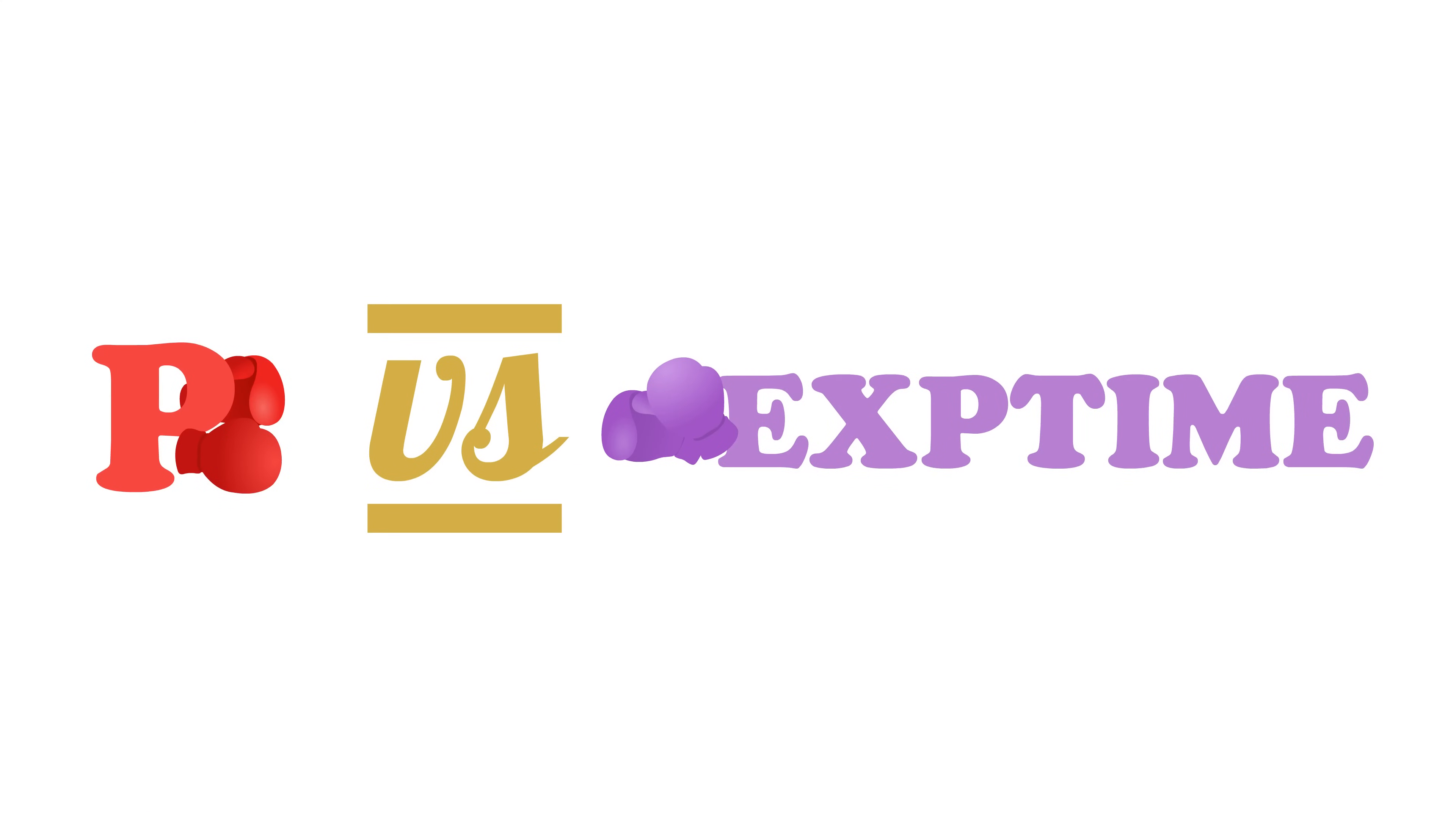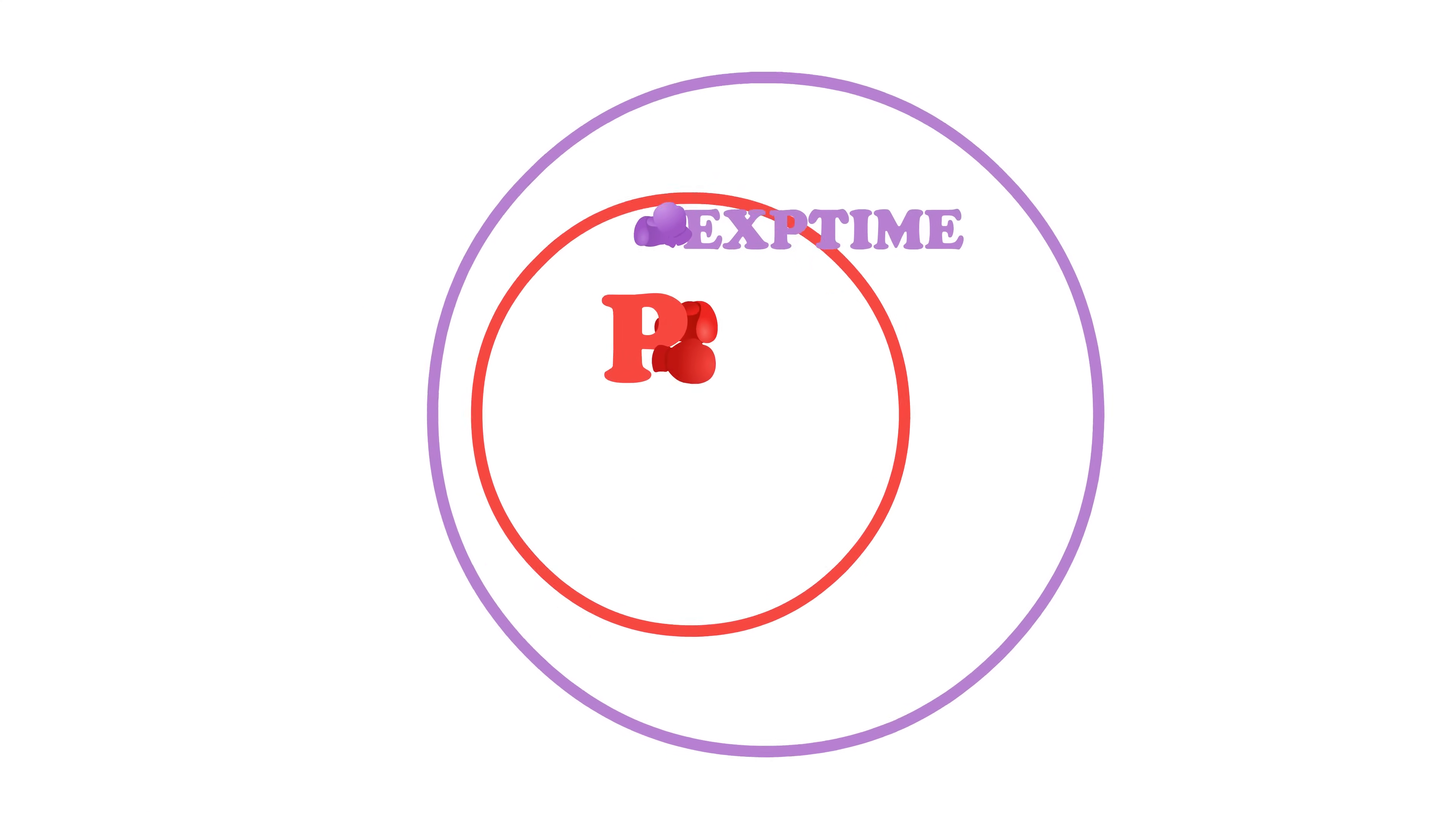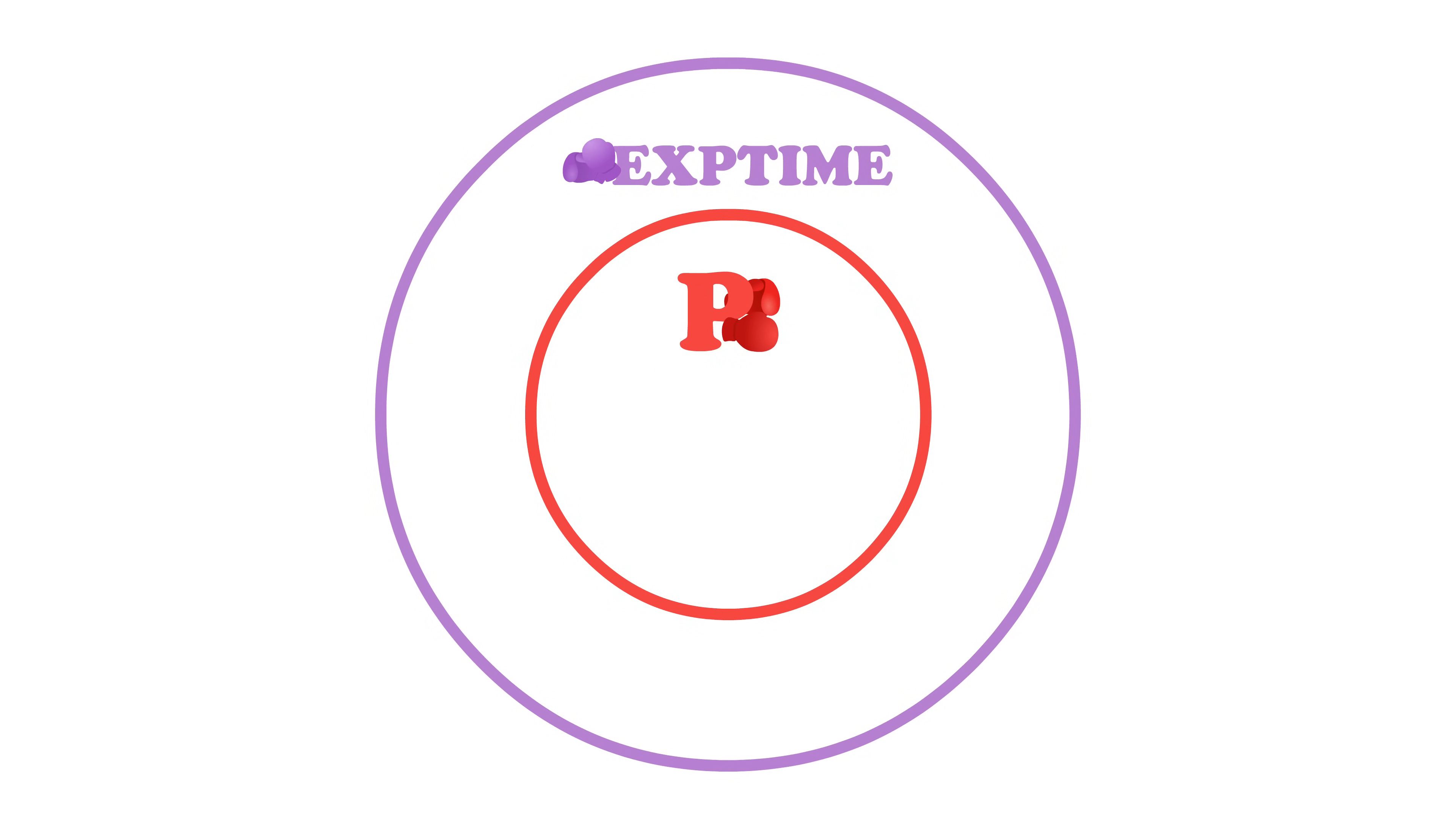Let's apply this to P versus exp time. First, note that P is definitely a subset of exp time. If a problem can be solved with a polynomial time algorithm, then it can definitely be solved in exponential time since polytime is faster than exponential time.